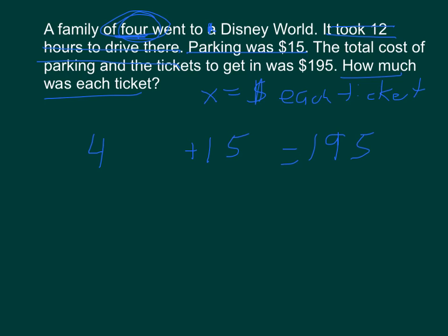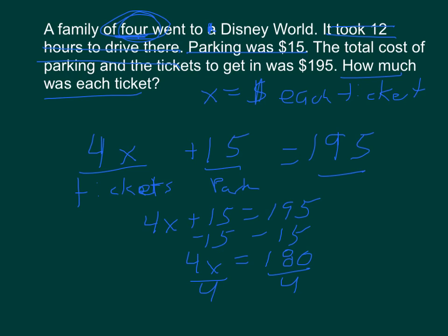If there were four tickets, and each ticket was x dollars, we're going to do four times x. This gives us the tickets total. This gives us the parking total. This is the whole total. 4x plus 15 equals $195. We're going to subtract 15 and we get $180. Four times the price of tickets equals $180. We'll divide by four. We will get x equals $45. It looks like the price of each ticket was $45.